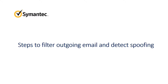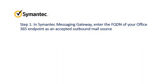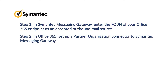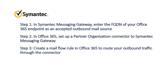Let's start with an overview. First, add the fully qualified domain name of your Office 365 endpoint as an accepted outbound source in Semantic Messaging Gateway — you'll edit the outbound SMTP settings in your host configuration. Next, you'll set up a partner organization connector in Office 365, which establishes the route between Office 365 and Semantic Messaging Gateway. Then you'll create a mail flow rule in Office 365 to send all your outbound traffic through the connector. With these three steps, the outbound connection between Office 365 and Semantic Messaging Gateway is complete.